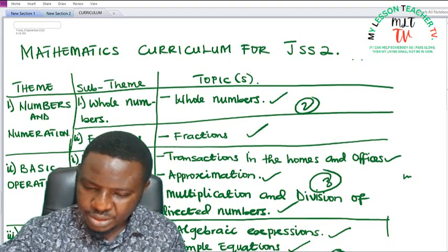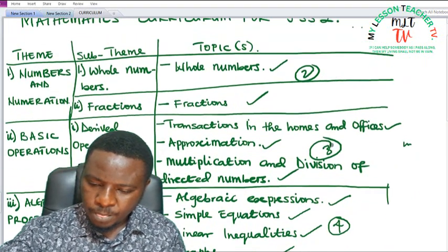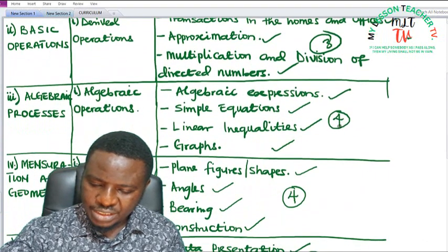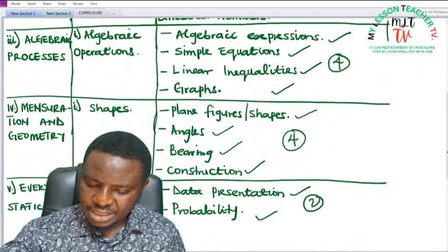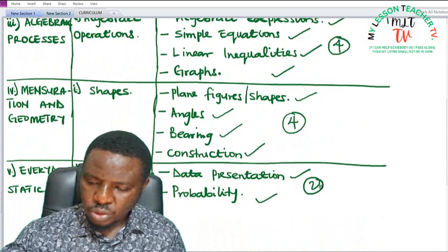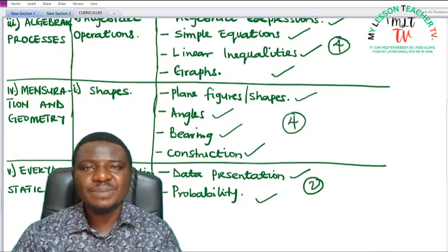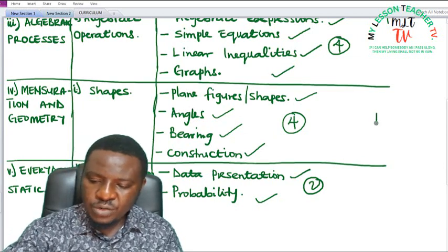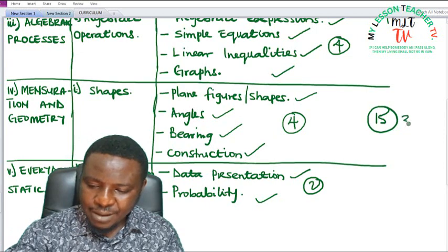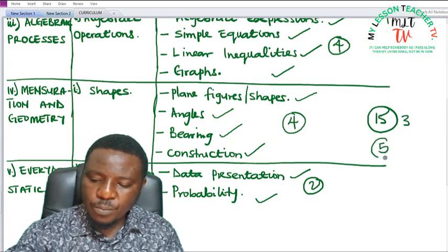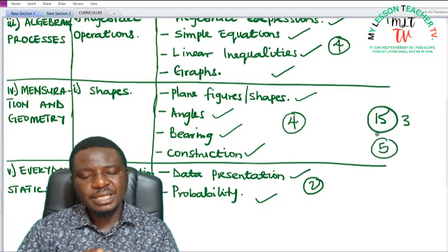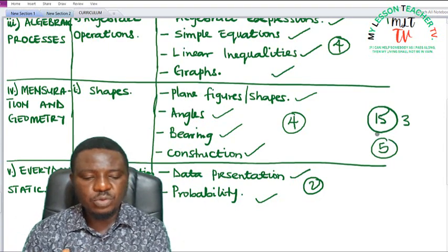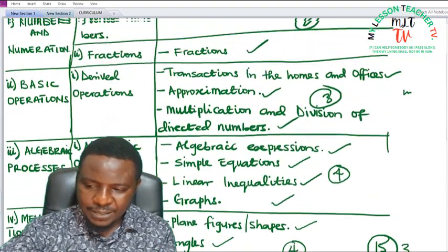For GSS2, let's count the number of topics: 2 plus 3 is 5, plus 4 is 9, plus 4 is 13, plus 2 is 15. So we have approximately 15 topics for you to do in GSS2. When you divide 15 topics by 3 terms, you get 5 topics per term — approximately 5 topics in 1st term, 5 in 2nd term, and 5 in 3rd term.